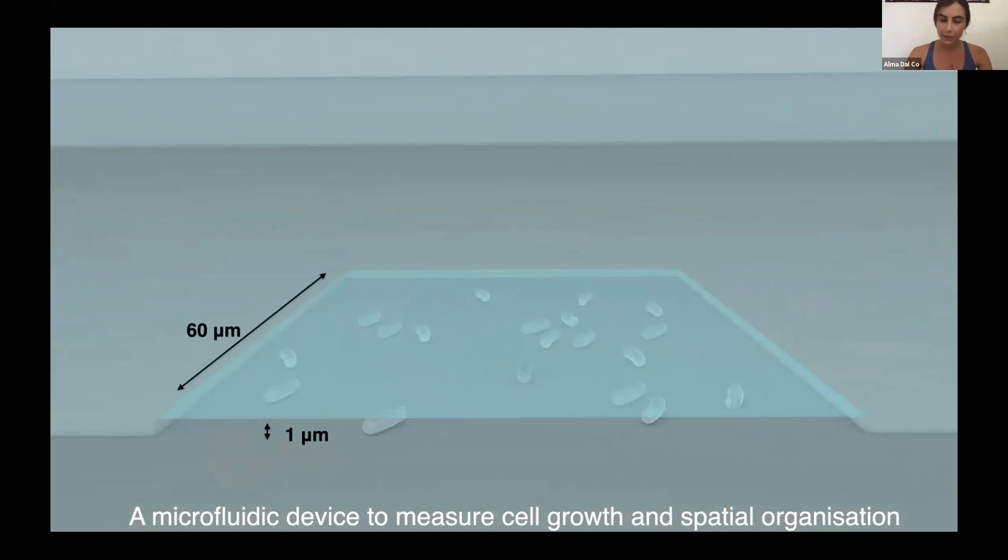This chamber can host about 1200 cells that grow as monolayers and we image these communities as they grow for about four days taking a snapshot every 10 minutes.